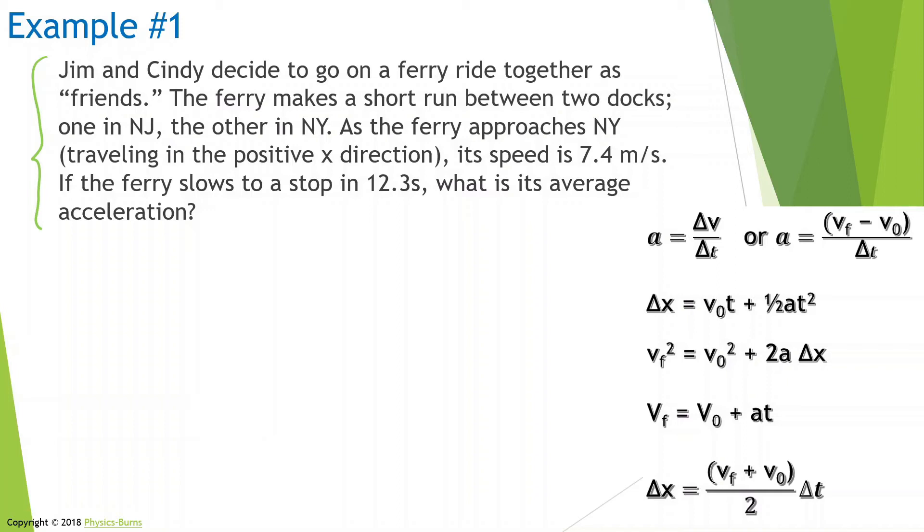As the ferry approaches New York traveling in the positive x direction—that's important—its speed is 7.4 meters per second. Whenever you see numbers, it's probably something you want to underline. If the ferry slows to a stop in 12.3 seconds, what is its average acceleration? This is important because when you have to reread the problem because you feel confused, you don't really have to read everything, you just have to read what you underlined.